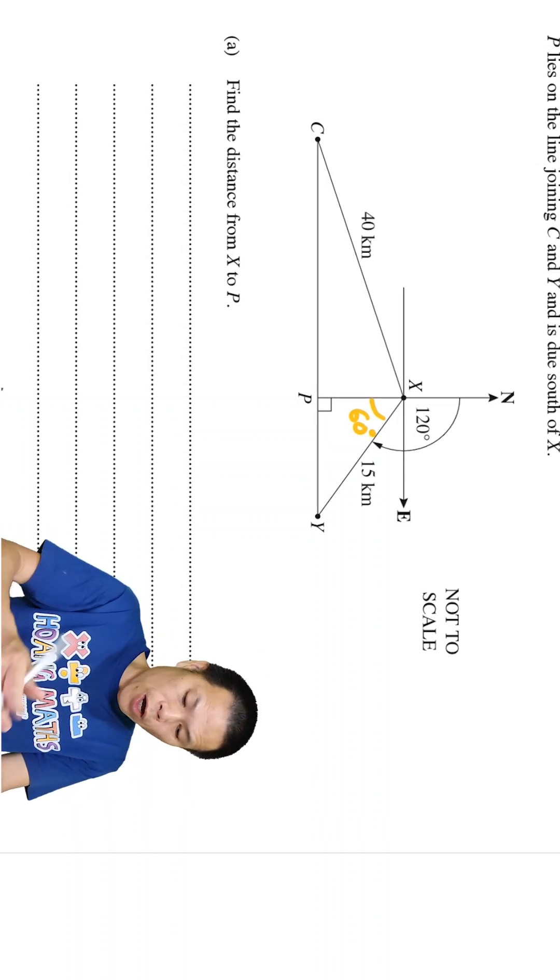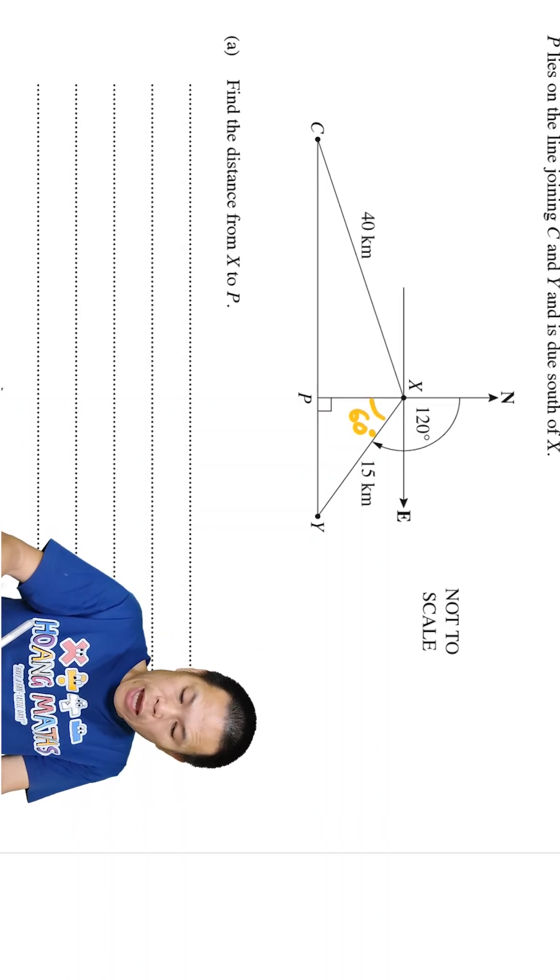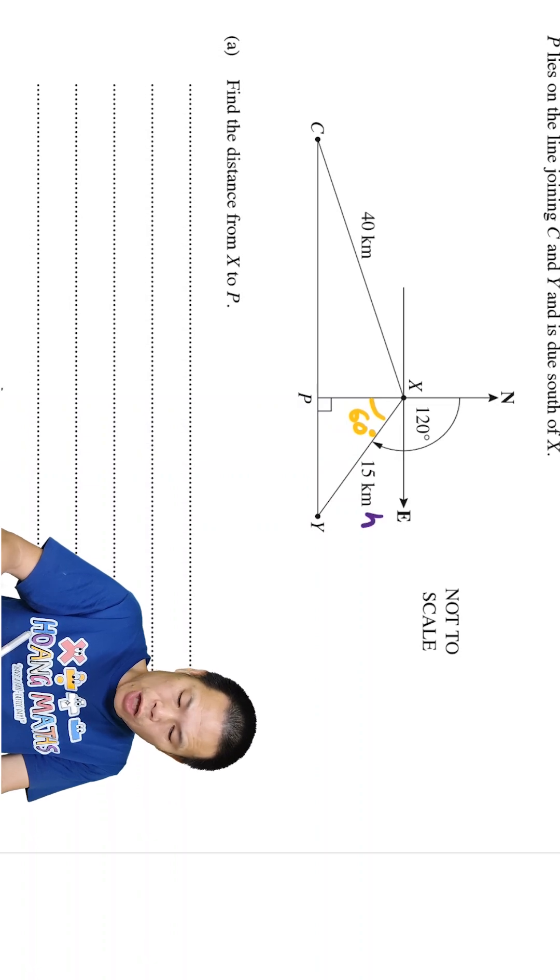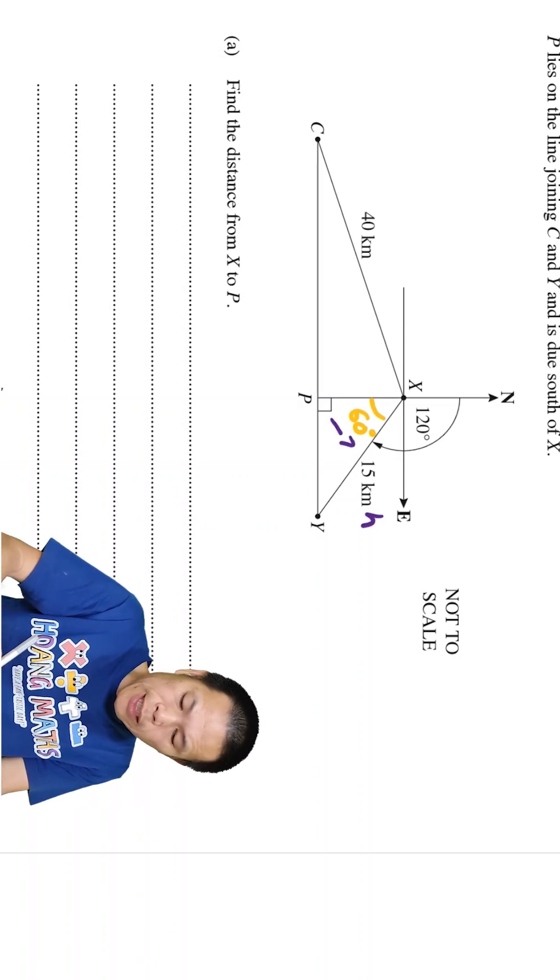So now what we need to find is xp. We have the hypotenuse here because it's opposite the right angle, and xp is next to 60 degrees, so it's adjacent.